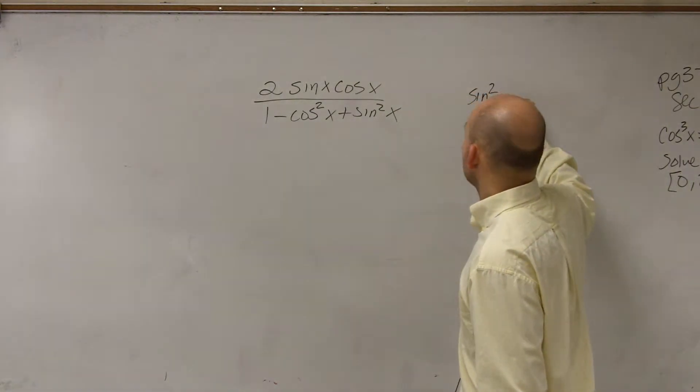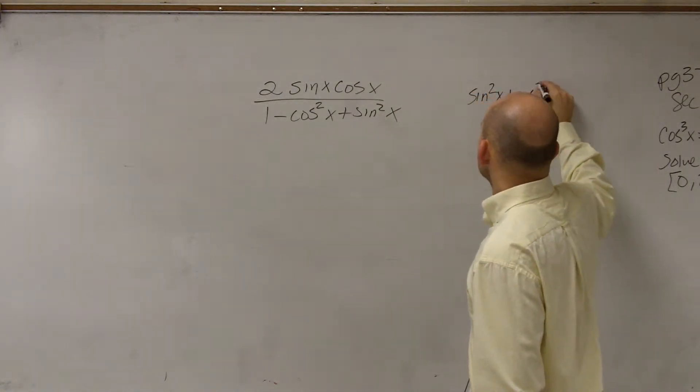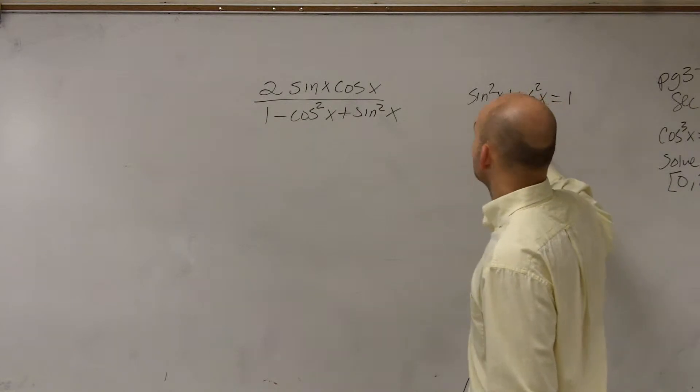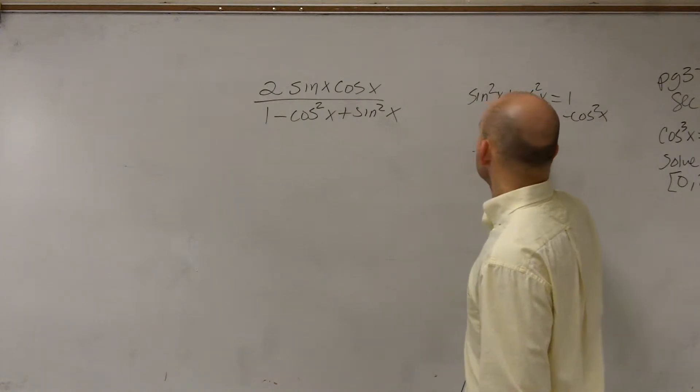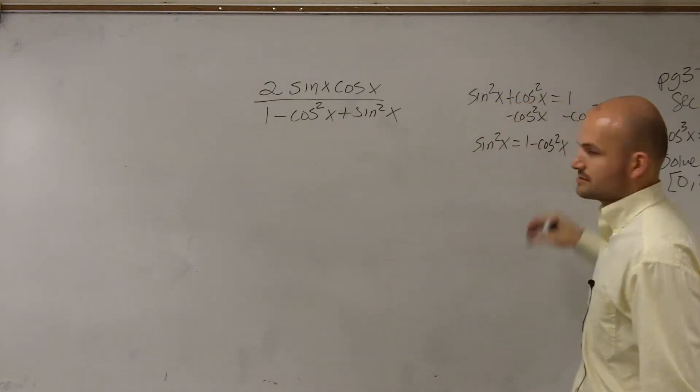So like I said, I have sine squared of x plus cosine squared of x equals 1. Well, if I solve for sine squared of x, I get sine squared of x equals 1 minus cosine squared of x.